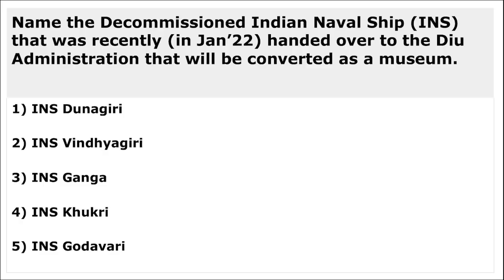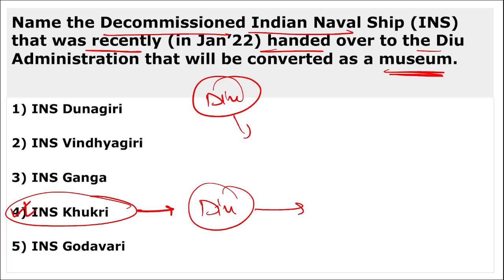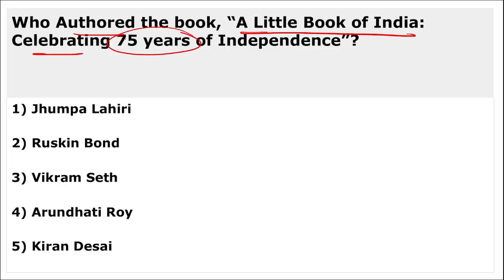Name the decommissioned Indian naval ship recently handed over to the Diu government and converted into a museum — it is INS Khukri. The book 'A Little Book of India: Celebrating 75 Years of Independence' was authored by Ruskin Bond — highly important for January month.